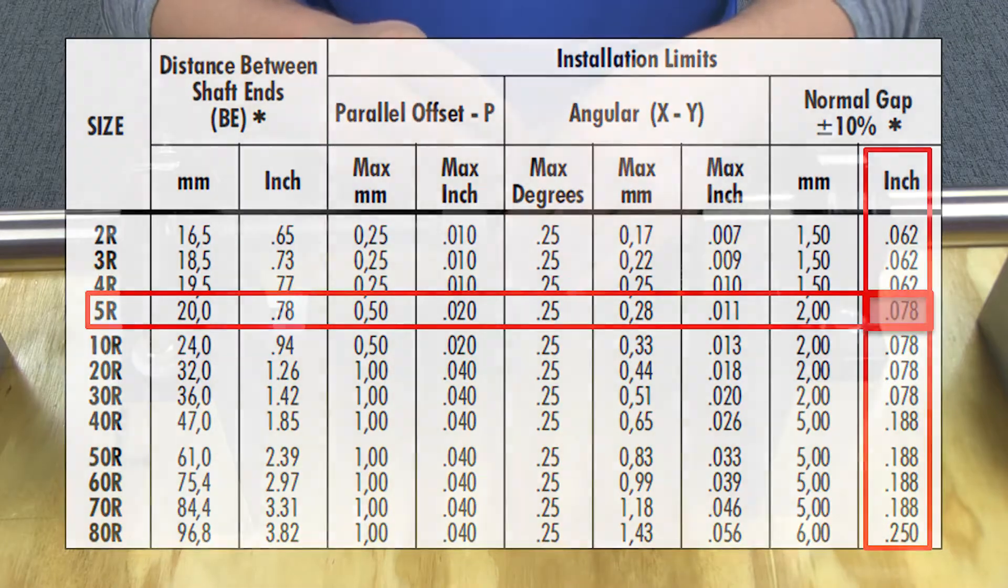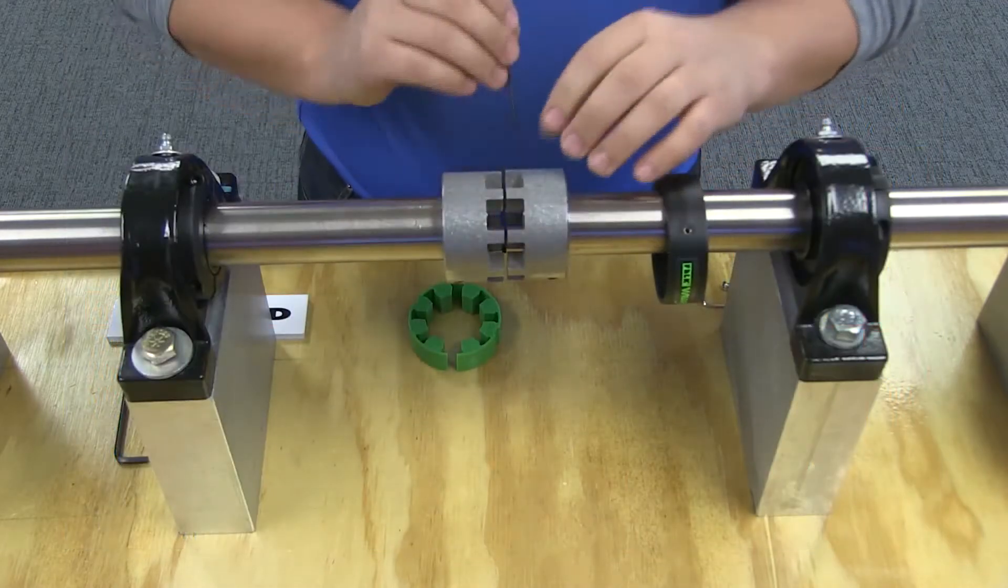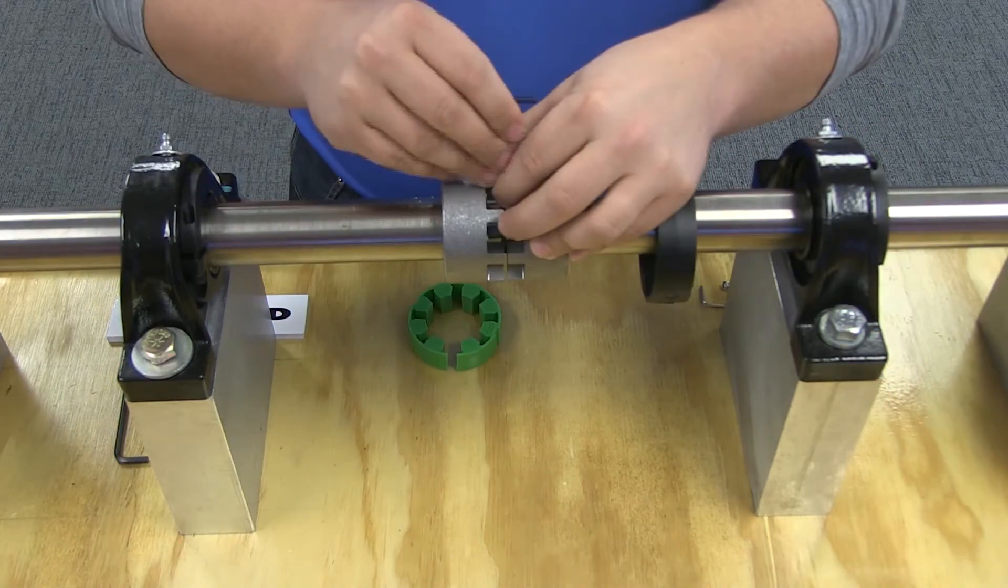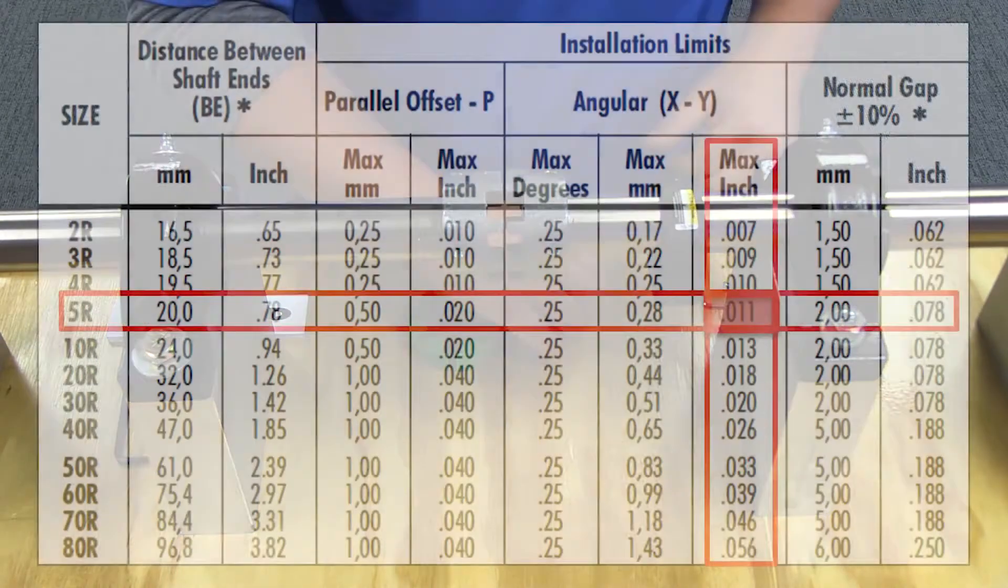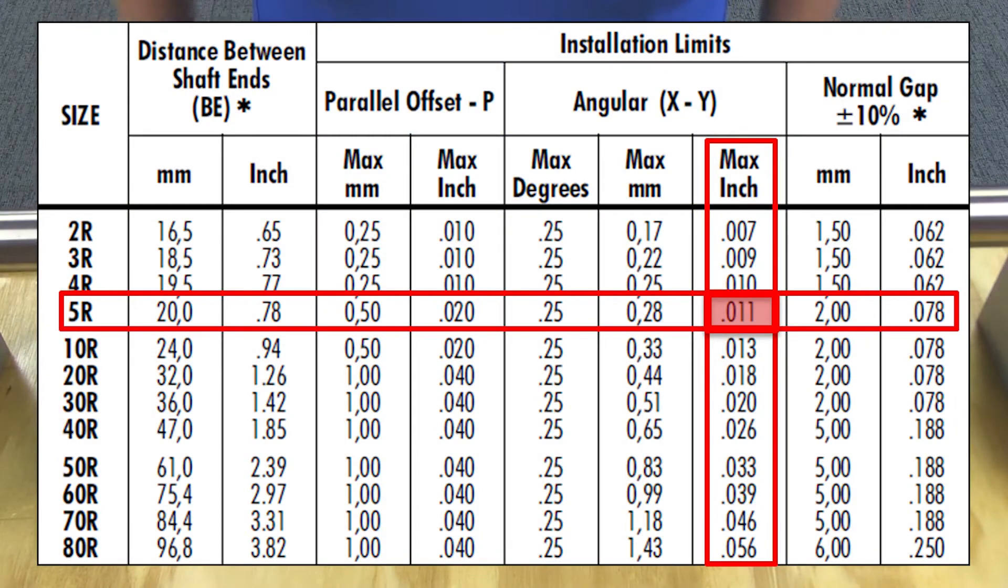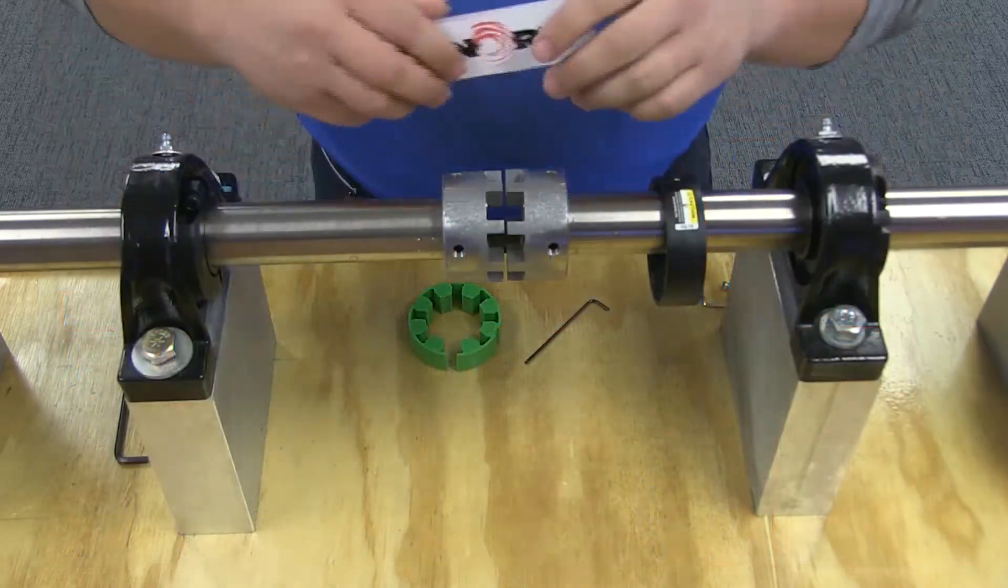Do this to the same depth at 90 degree intervals and measure clearance between the bar and the hub tooth face with feelers. The difference between minimum and maximum gap measurements must not exceed the angular installation limits specified in this table.